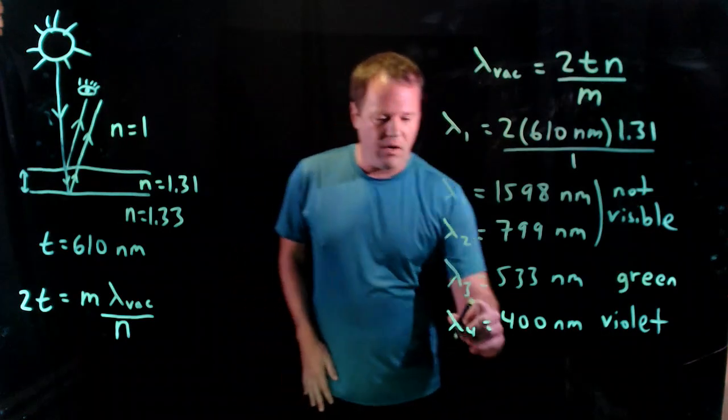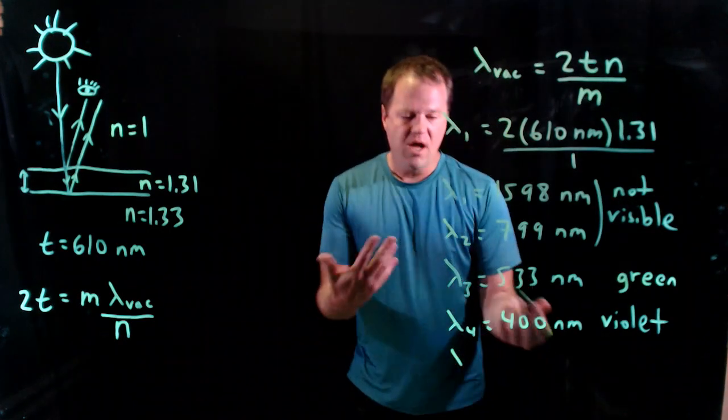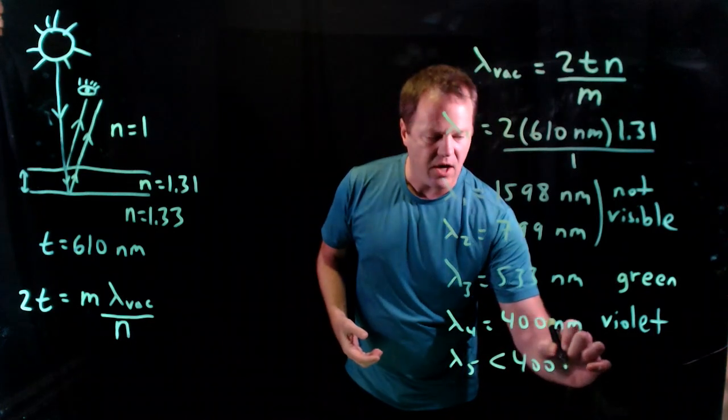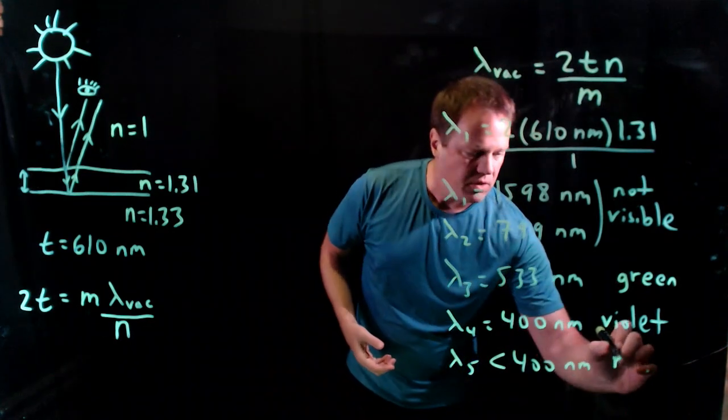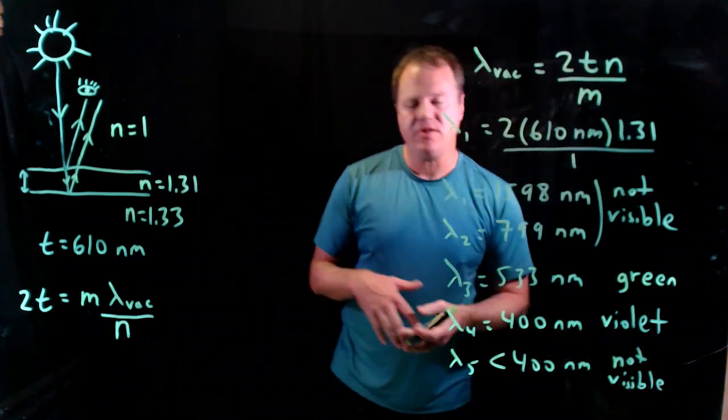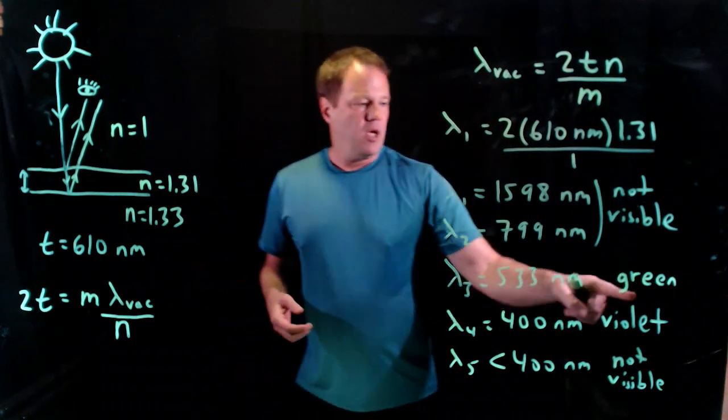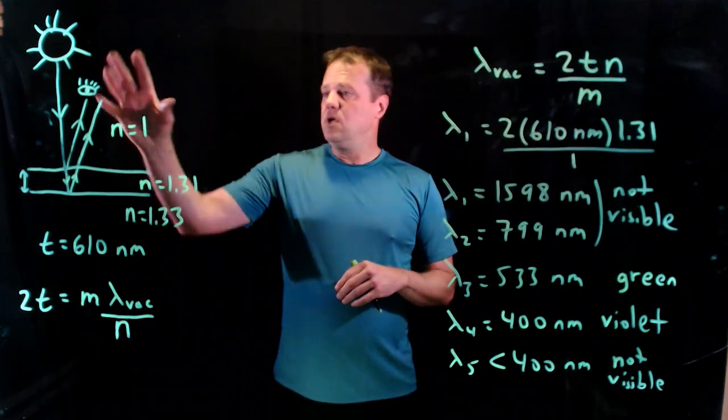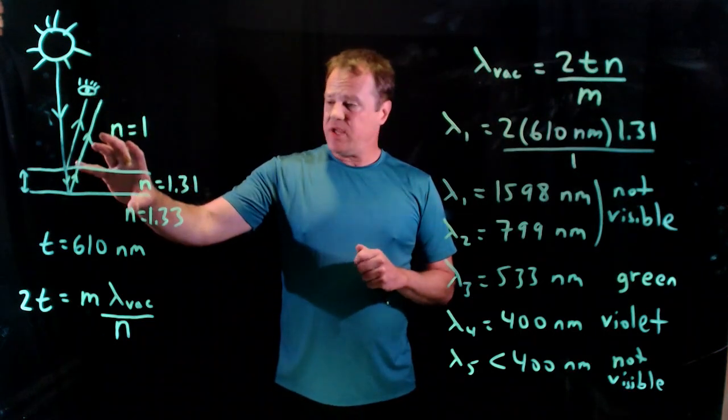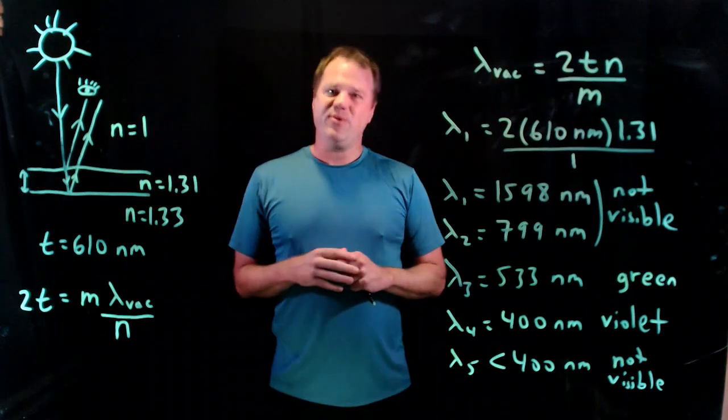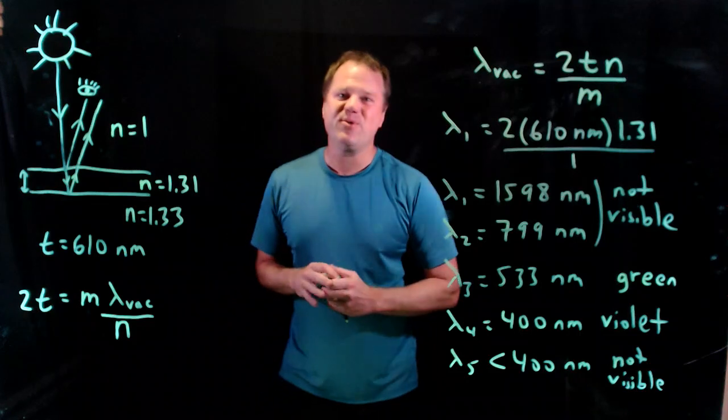Okay, and if we go to wavelength 5 then that's clearly less than 400 nanometers and that's also not visible. So we're done. We found the two wavelengths, or I did, you watched, found the two wavelengths of visible light that will constructively interfere for a thin film of ice on top of liquid water. Okay, so that's it. Thanks for watching.